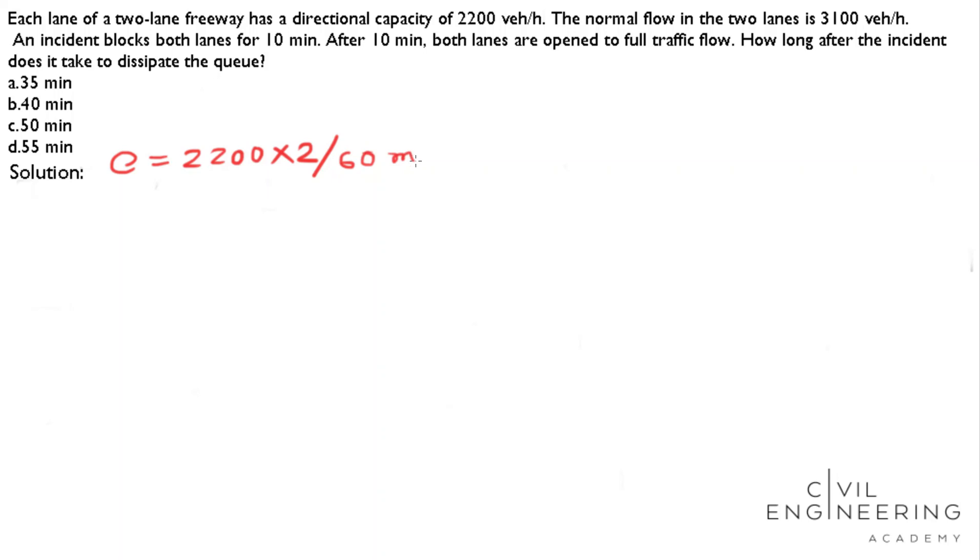After calculation, I get the value 73.33 vehicles per minute. Now we are going to calculate flow rate Q. Q equals the same way: 3100 vehicles per 60 minutes. I get the value 51.67 vehicles per minute.